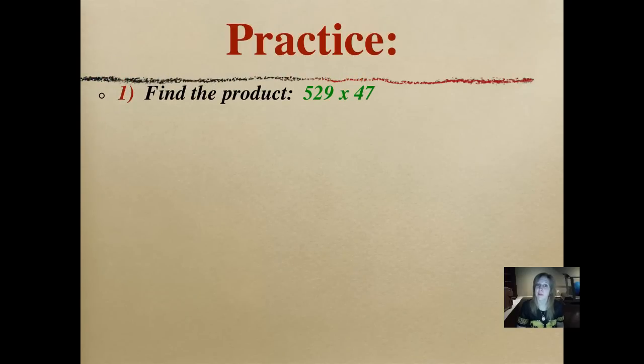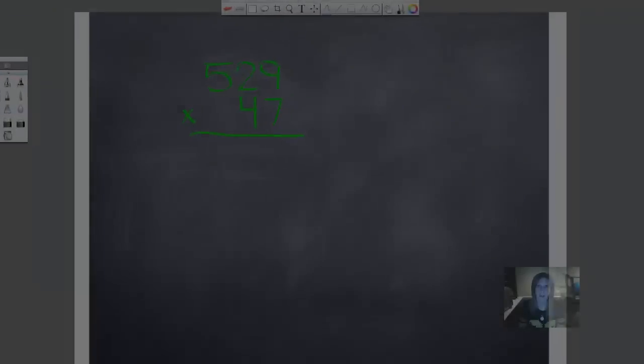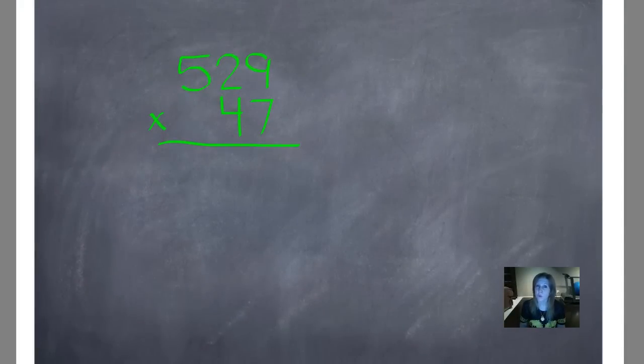We're going to do some practice problems. Number 1. Find the product for 529 times 47. Don't forget to check, pause, and push play when you're ready. Did you write 24,863? Was your magic number 5? Let's see how you did that. We're ready to multiply. If I seem to be going too quickly, remember, you can still pause me while I'm going through the example just to slow down to write your numbers down. Take your time. Make sure you're learning. It's more important that you learn it than that you move through it quickly.